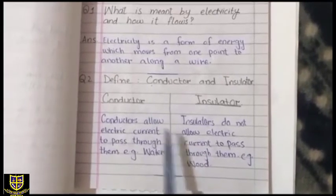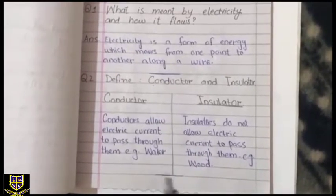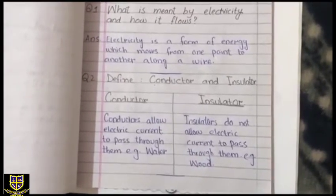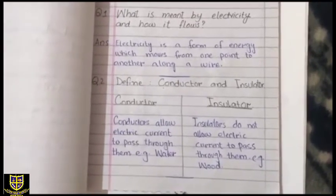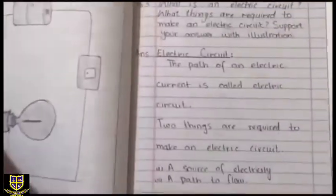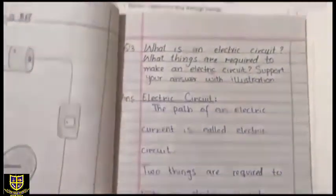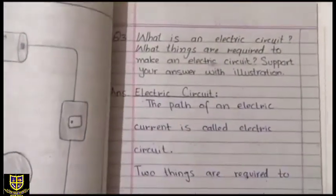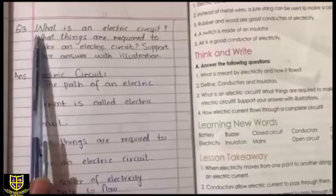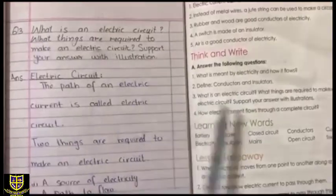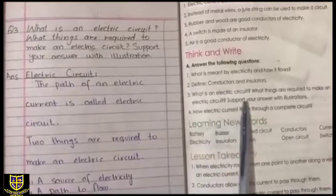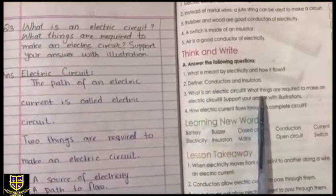The second question is finished. You have to draw an ending line. Now question number three: what is an electric circuit?